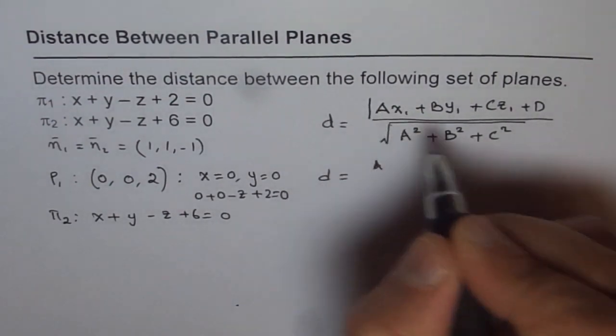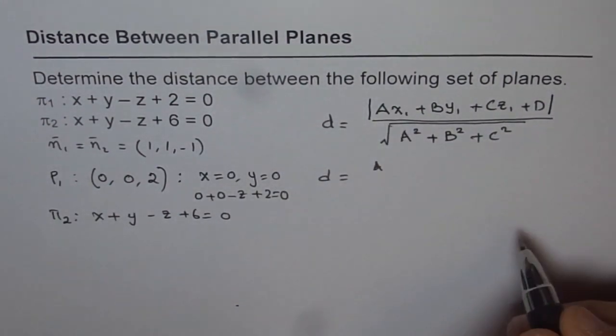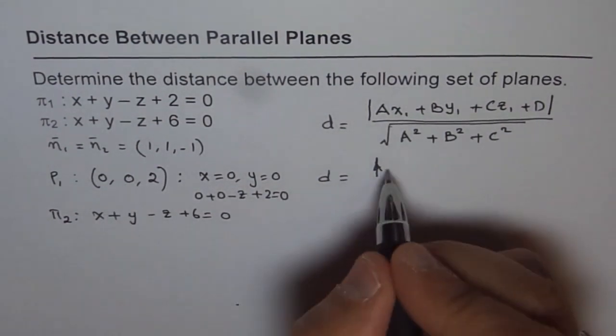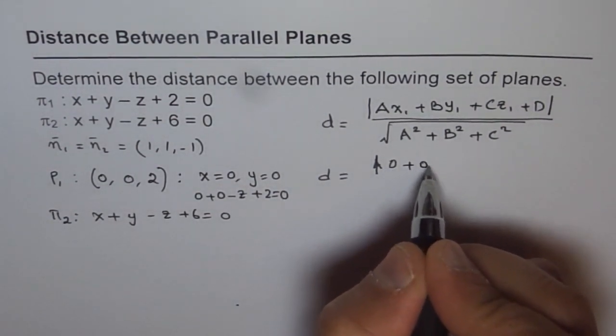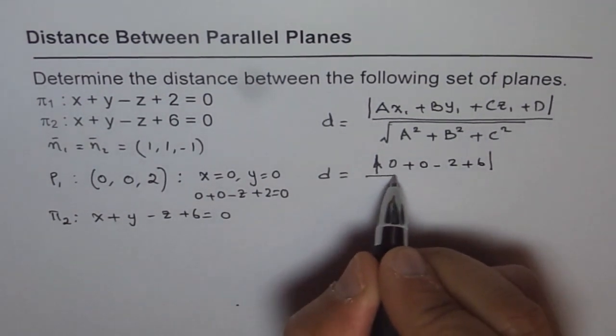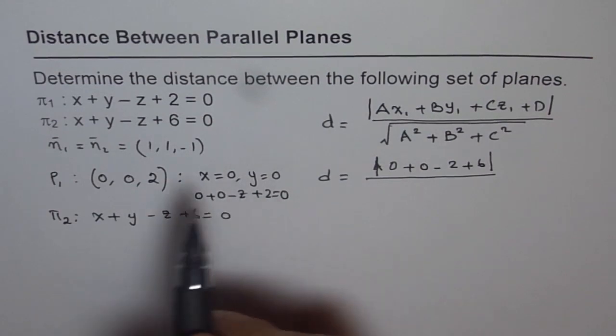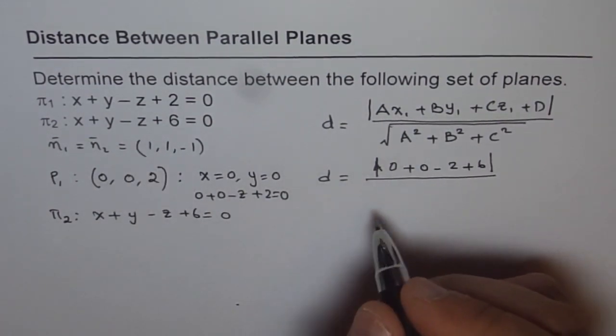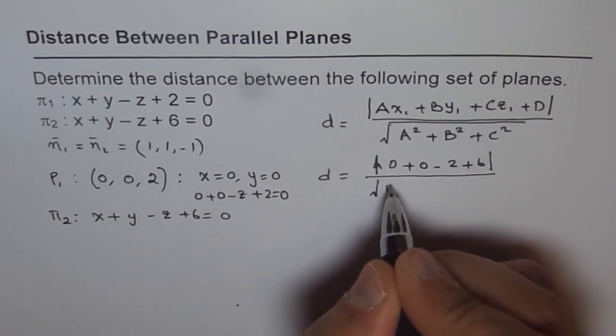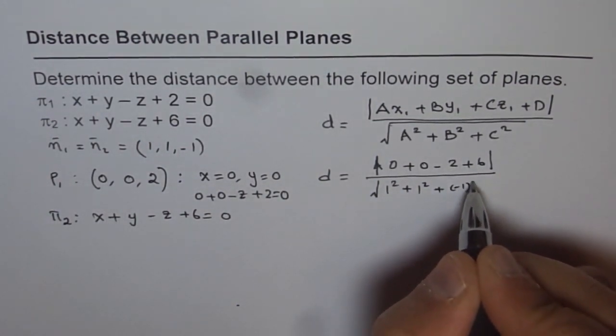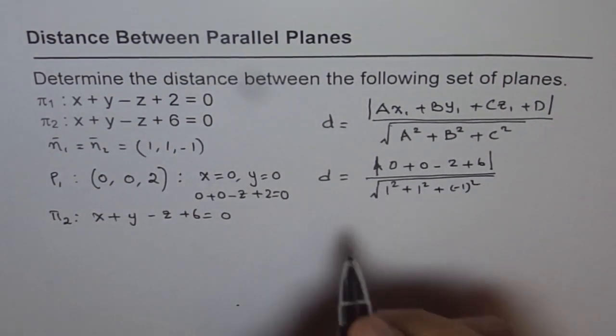Remember, the numerator is an absolute value. Distance is always positive, so we will take absolute value. We will put these points here, we get 0 plus 0 minus 2 plus 6. That is the numerator. And in the denominator, we have direction numbers 1, 1, minus 1 for the plane.